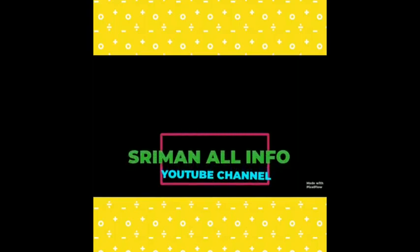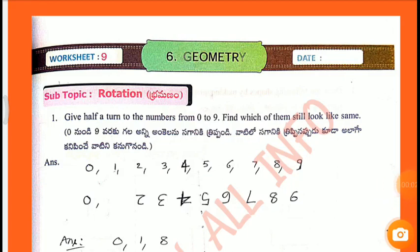Welcome to Alinfo Media. Worksheet No. 9, subtopic: Rotation. First question: give half a turn to the numbers from 0 to 9 and find which of them still look the same.